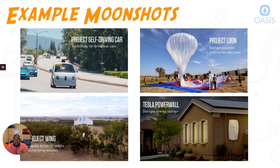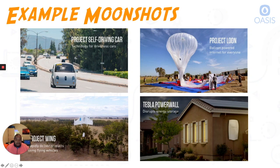Some example Moonshots — most of these are actually from Google. The self-driving car is really a solution to urban transportation, an attempt to reduce congestion and accidents, and loss of life due to accidents. Then we have Project Loon, where you have balloon-powered internet. They actually launch balloons up into the stratosphere and provide broadband Wi-Fi for those in a certain area. The concept is that you have these balloons spread out around the world and everybody gets free Wi-Fi.